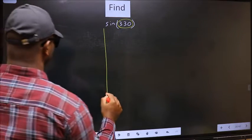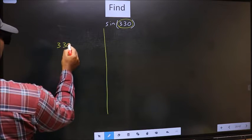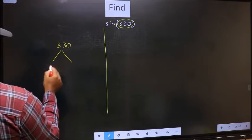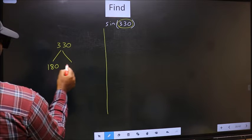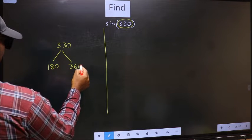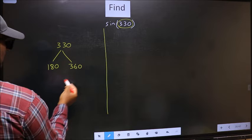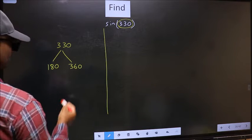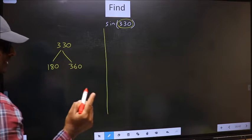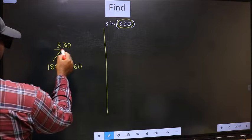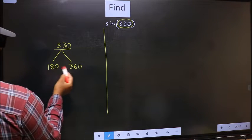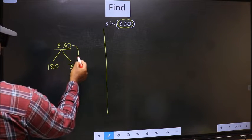What I mean is 330 lies between 180 and 360. This is 180 into 1 and this is 180 into 2. Now 330 is close to which number? This is close to 360.